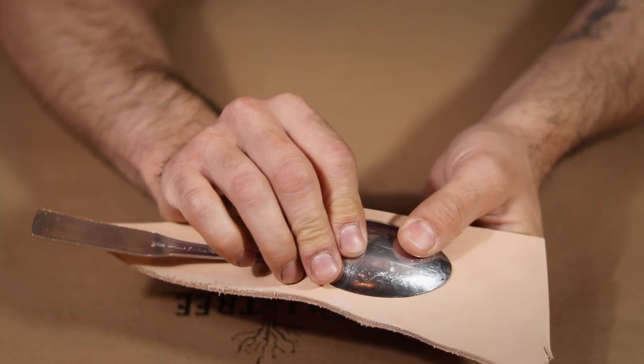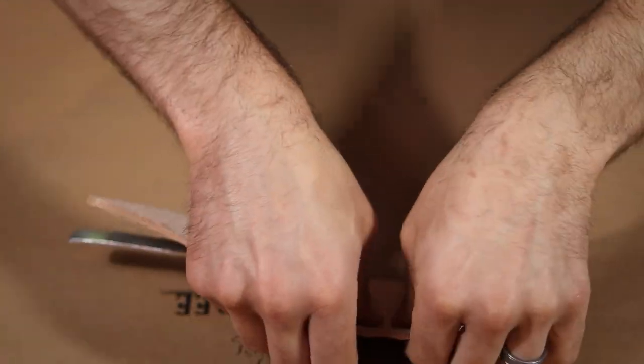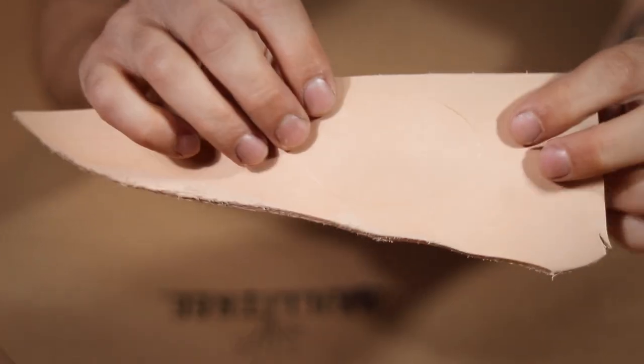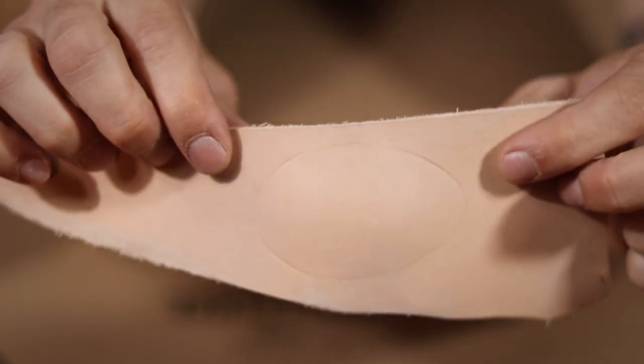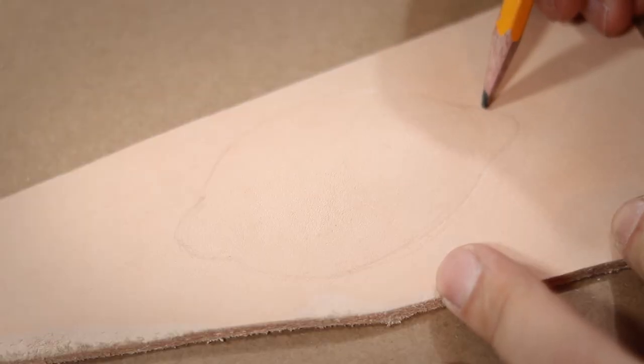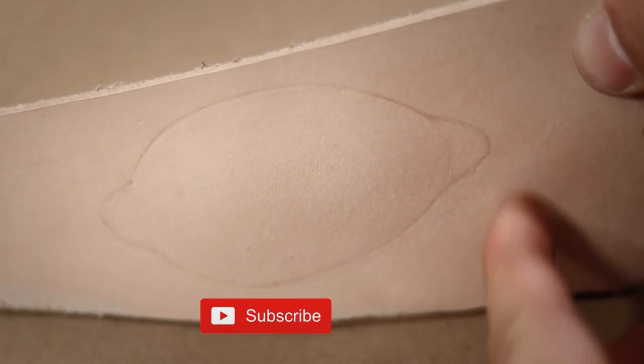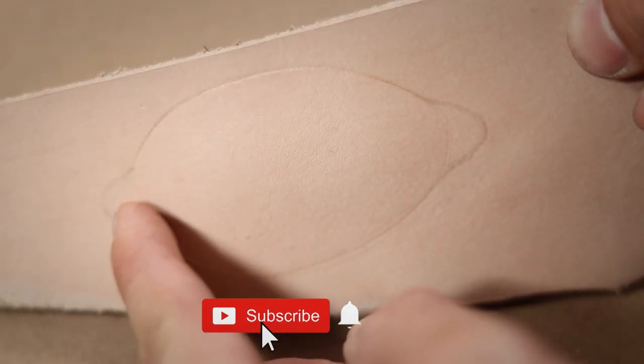I start by pressing the leather scrap into my spoon. This leaves behind a slight indentation to use as a guide for my cuts. I also drew in these two tabs on either side, just to have an area to connect the strap to later.